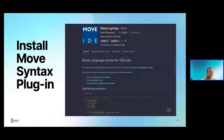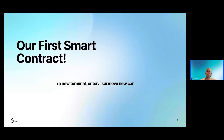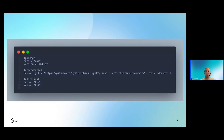Once all the binaries and syntax highlighter are installed, in a new terminal enter 'sui move new car' to create a new package named car. You'll see two items generated: a file called Move.toml and a directory called sources. The main unit of Move code is called a package, and a package must include these two items. Move.toml shows the package dependencies and metadata, and sources is where you'll write actual Move code.